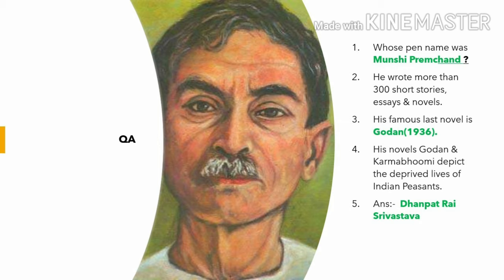He also wrote the novel that is the base for Satyajit Ray's film. In the 1920s, he was influenced by Mahatma Gandhi's non-cooperation movement and the accompanying struggle for social reform. During this period, his works dealt with social issues such as poverty, zamindari exploitation, the dowry system, educational reform, and political oppression.